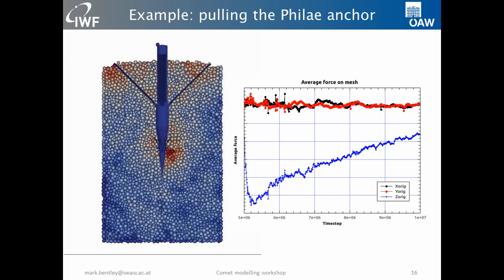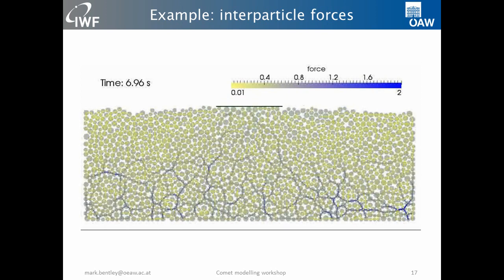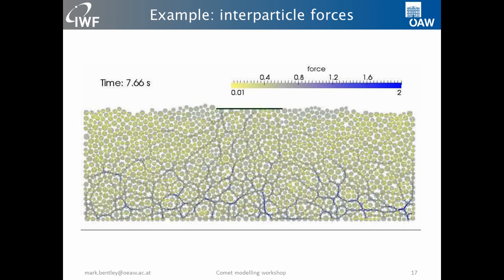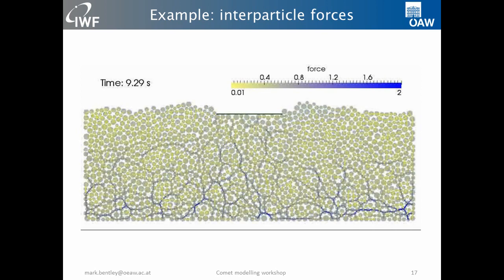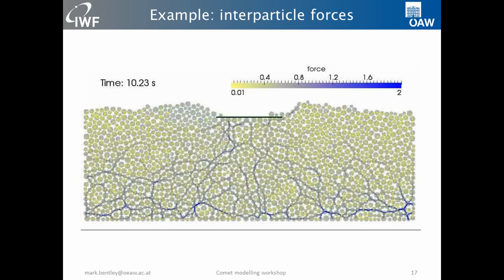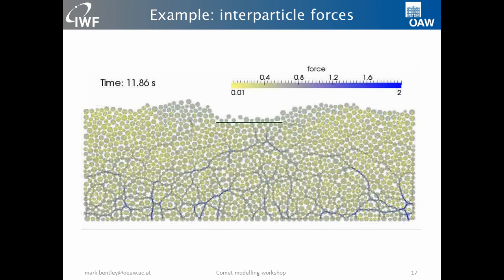The nice thing about discrete element modeling is that you have access to everything going on inside the system — on a per-particle level to all of the forces, and to the forces between particles. In granular systems, nothing is nice and homogeneous; we have this very heterogeneous force network, where force is transferred through a system via the larger particles preferentially. Through this force network, particles are being pushed together harder, meaning you have an enhanced contact surface area and therefore an enhanced thermal conductivity.